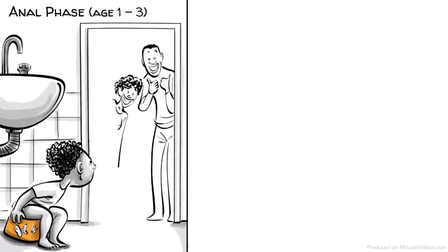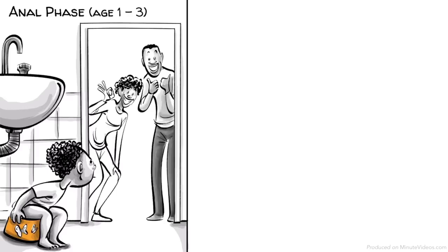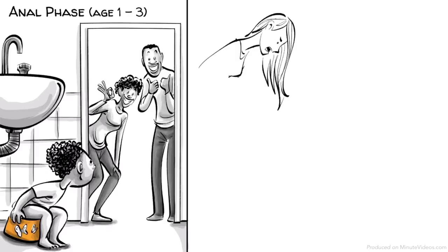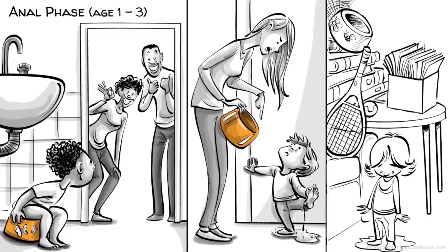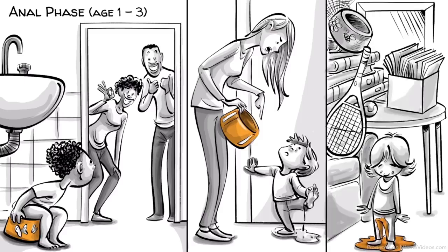Hans's parents praise his attempts to use the toilet and encourage him to learn at his own pace. Ernst's parents force potty training on him too early and punish him for mistakes. Ida's parents neglect any efforts at potty training entirely.